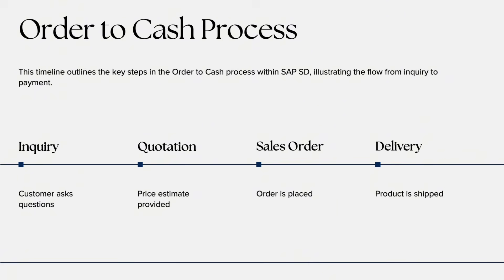Step two is Sales Order Creation. Once the customer agrees, a sales order is created in the system using transaction VA01. The sales order contains details like material, quantity, delivery date, pricing, and shipping address. Step three is Availability Check and Credit Check — SAP automatically checks if the product is in stock and whether the customer has enough credit limit.